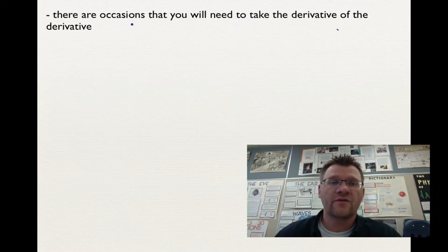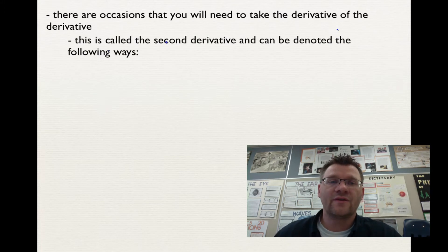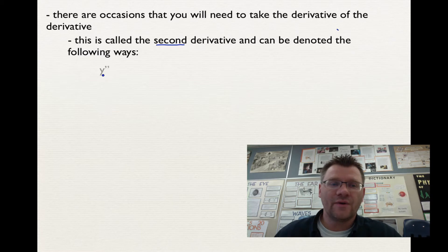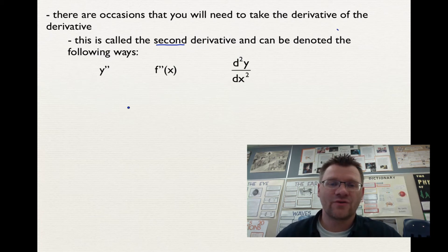There are occasions that you're going to need to take the derivative of a derivative, and this is called the second derivative. It's important to know, and it can be denoted in the following ways: y double prime, f double prime of x, or d squared y over dx squared. These all mean the second derivative.